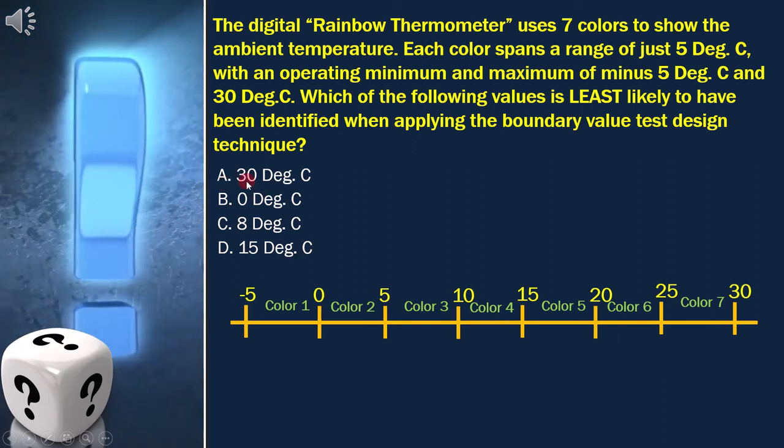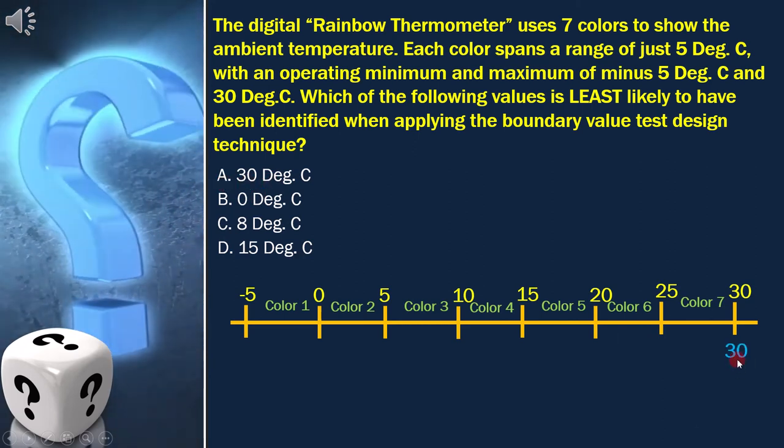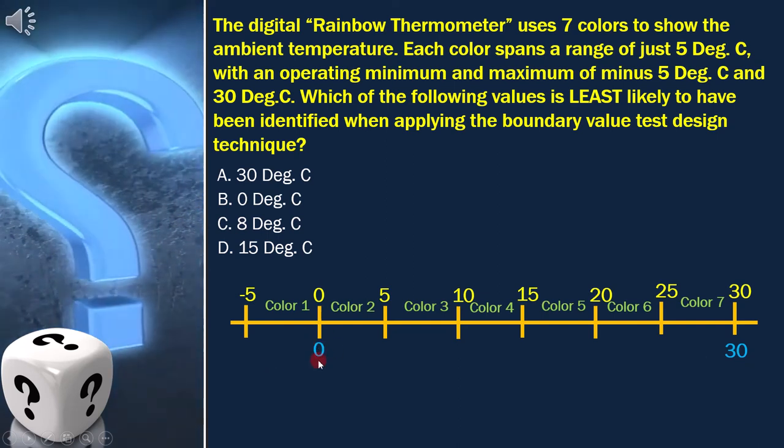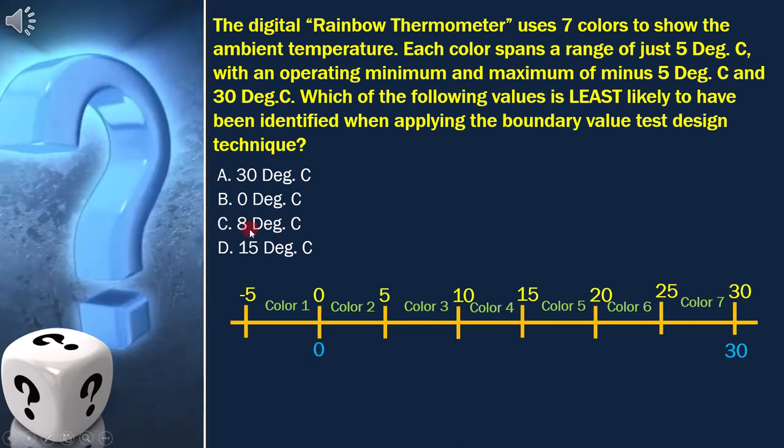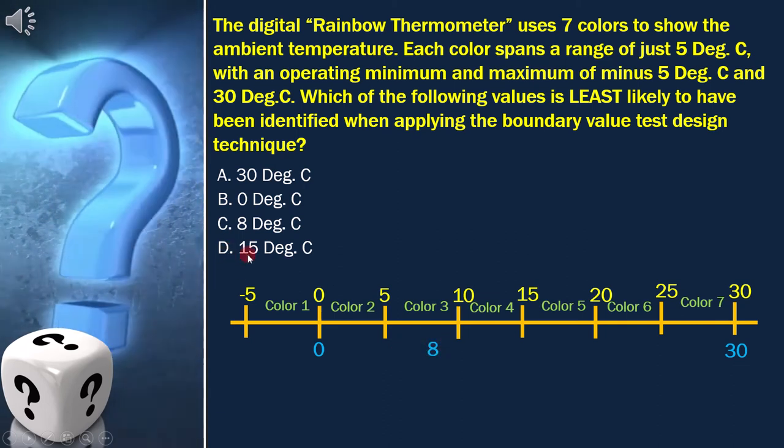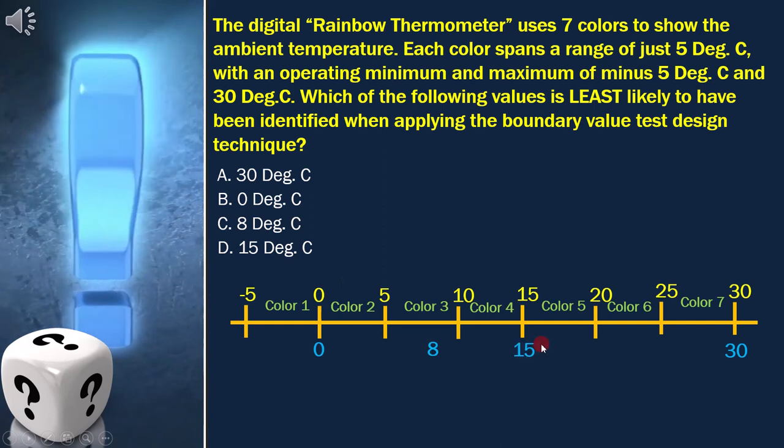Option A is 30. We can place it here. Option B is 0. We can place it here. Option C is 8. We can place it here. And option D is 15. We can place it here.